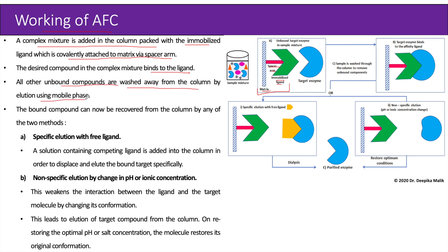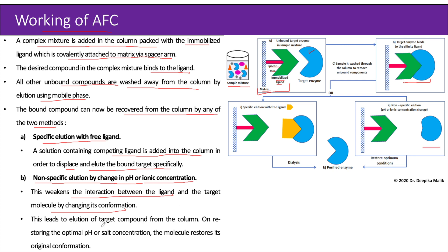As seen in the diagram, the sample mixture contains four different types of components, out of which only the blue color target enzyme binds to the immobilized ligand, while all other components are washed out of the column. The bound compound can be recovered by two methods: first, specific elution with free ligand — a solution containing a competing ligand is added to displace and elute the bound target specifically. Second, non-specific elution by change in pH or ionic concentration, which weakens the interaction between the ligand and target molecule by changing its conformation. On restoring the optimal pH or salt concentration, the molecule restores its original conformation.